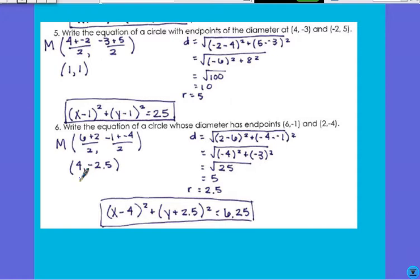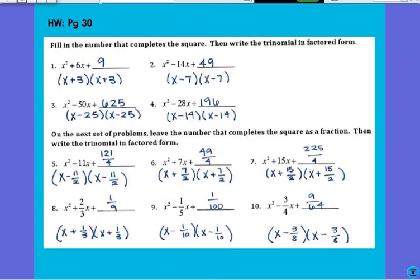All right. Good. So we're taking our center, doing x minus that, x minus, or y minus the y, but it's right opposite of negative, it's positive, and then r squared. So we take the radius and square it.